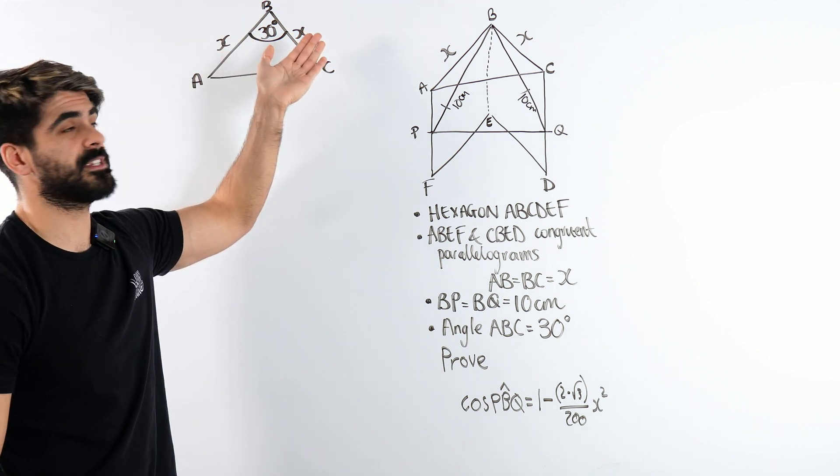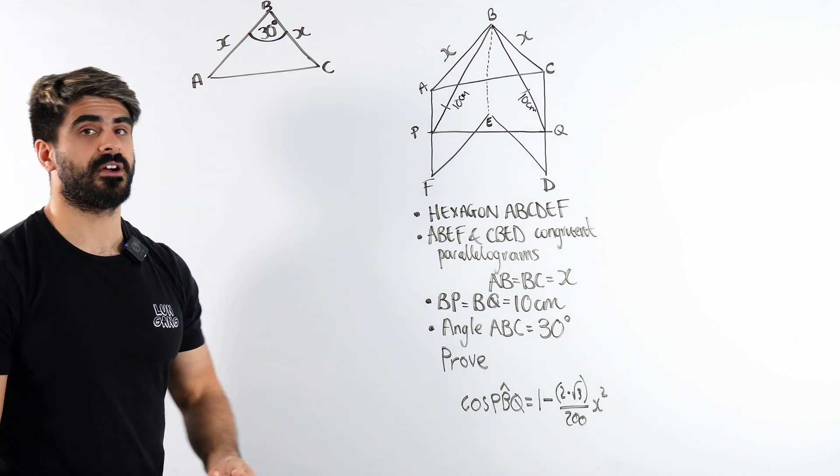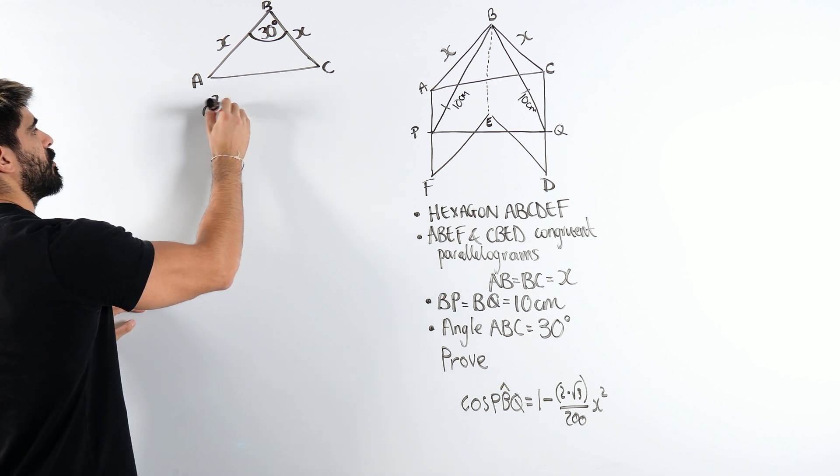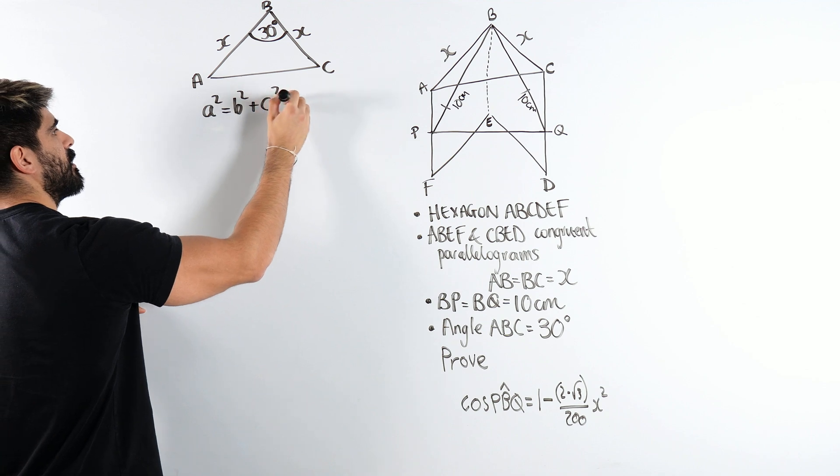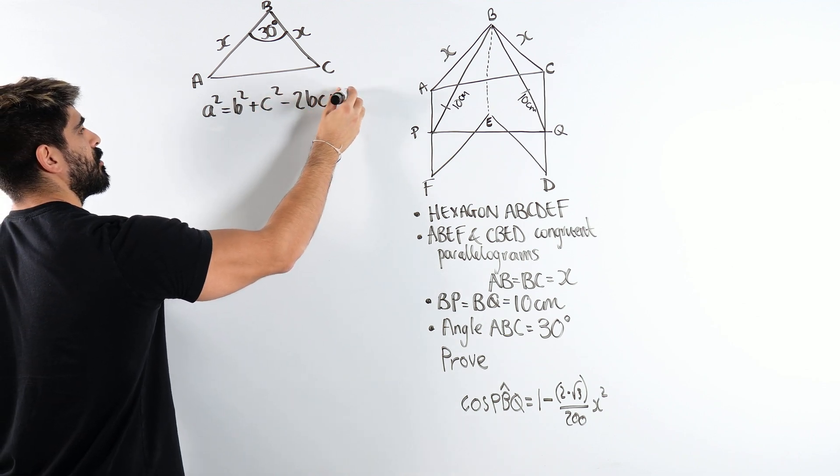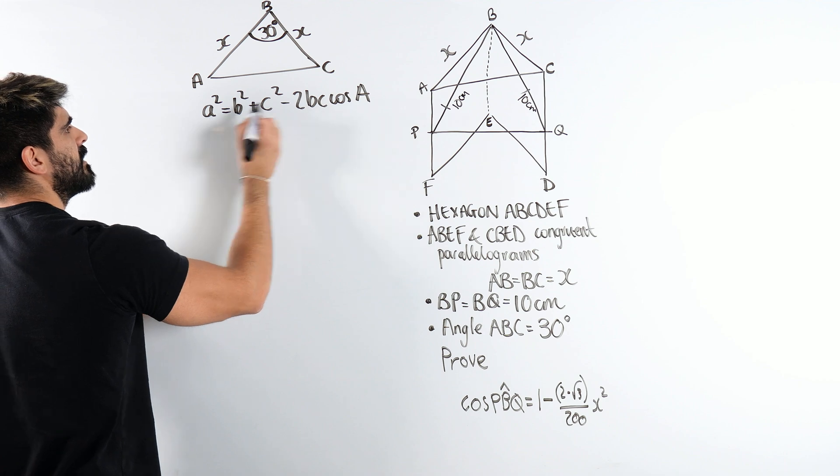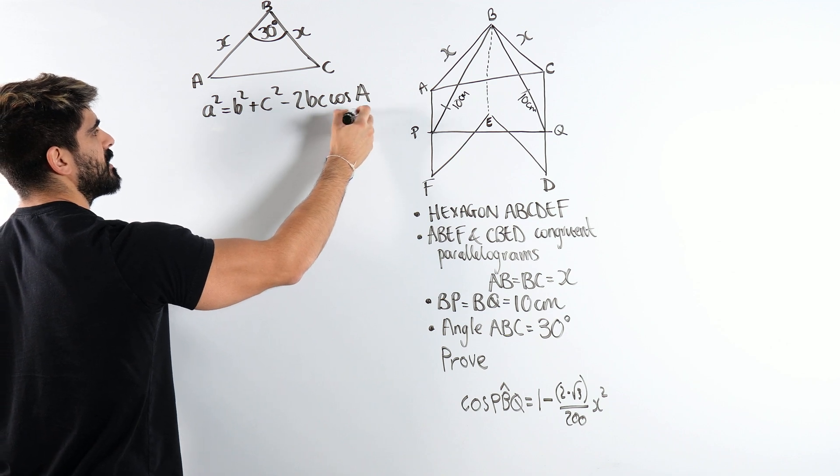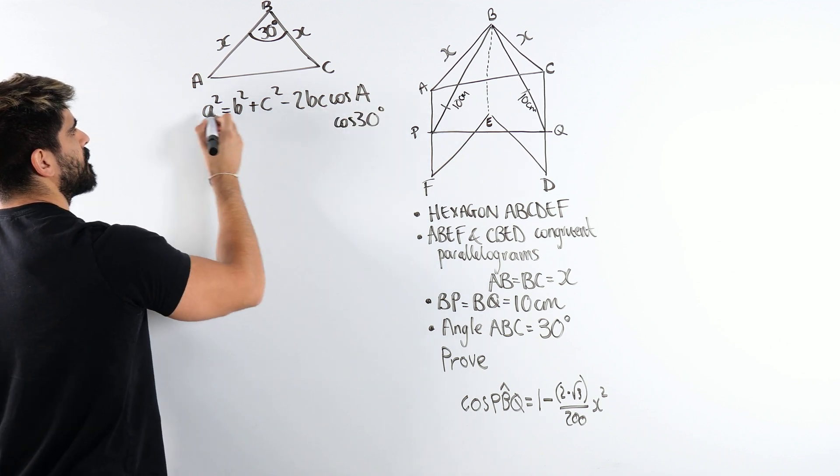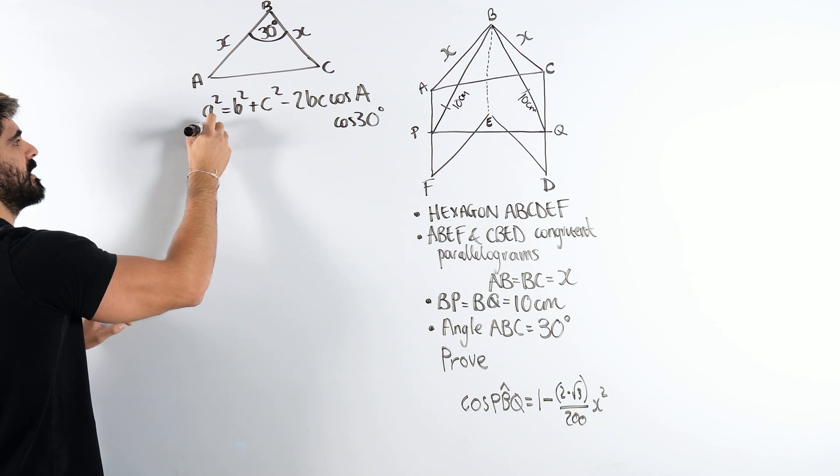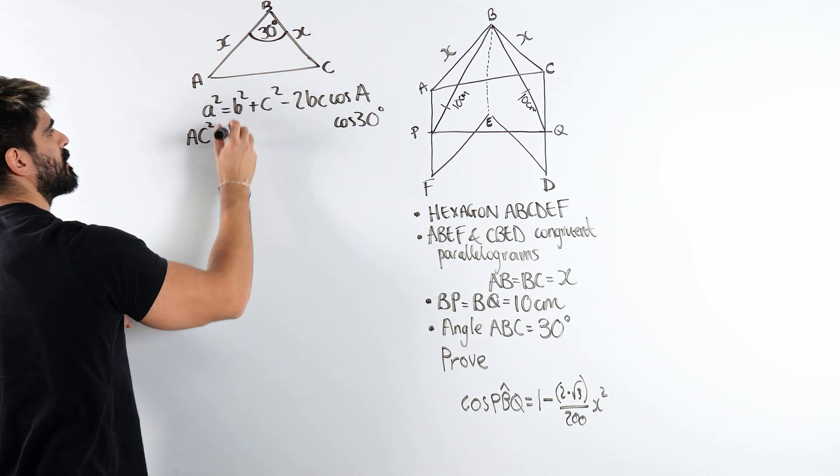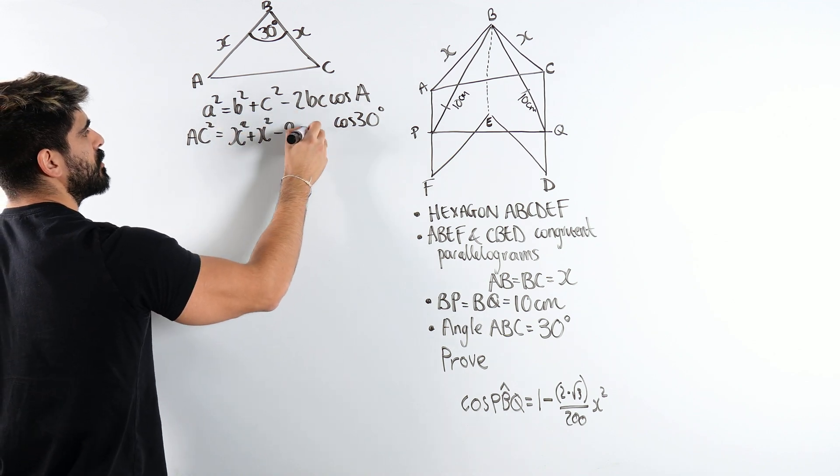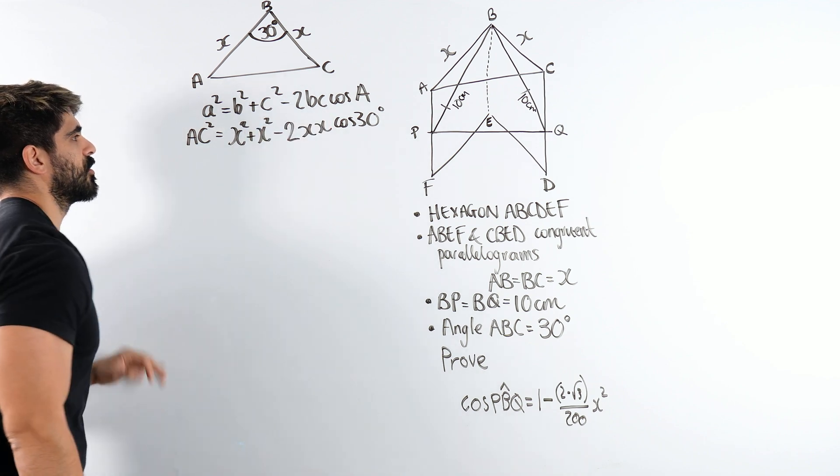And maybe you're thinking we can divide it by 2. But then you're dealing with 15 degrees. It is a non-calculator paper so we can't be doing that. So what is the cosine rule? A squared is B squared plus C squared minus 2BC cos A. Now little a and the angle in question have to be opposites. So this is going to be cos of 30 degrees. AC squared is X squared plus X squared minus 2 times X times X cos of 30.